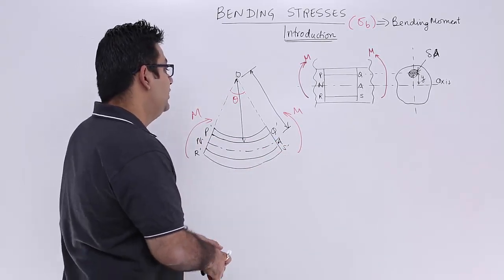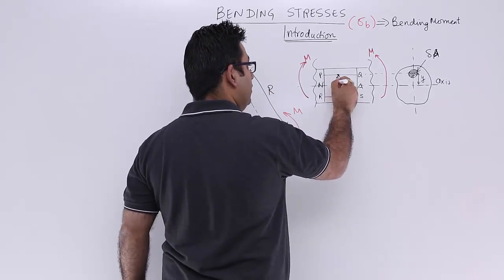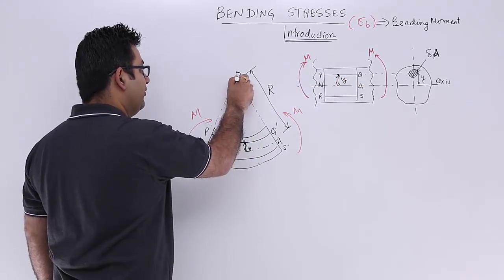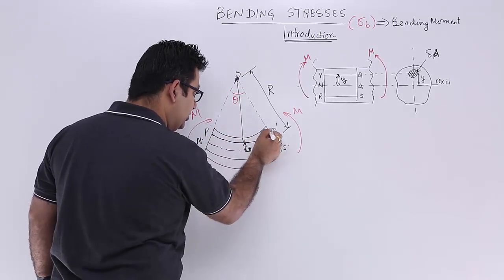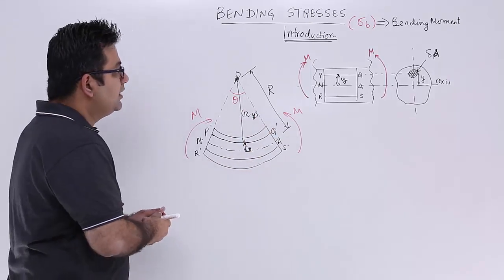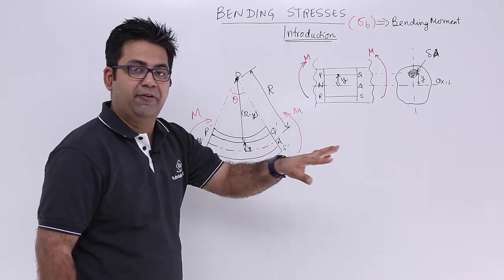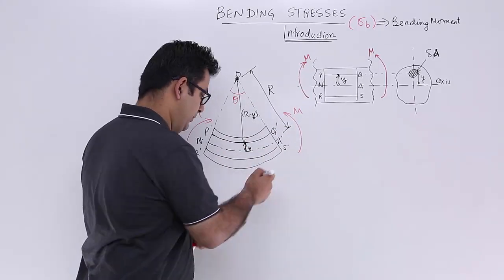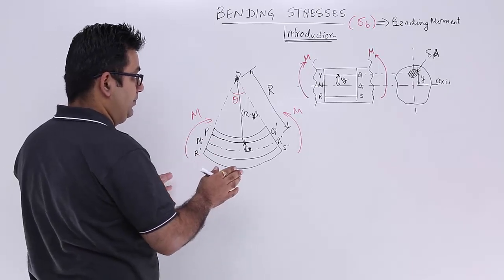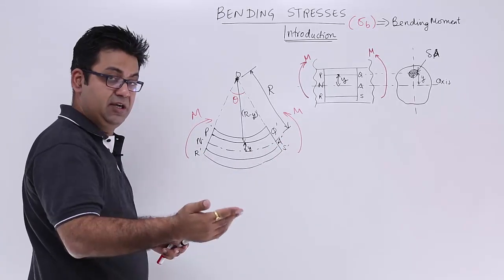From center O to the neutral axis NA, the radius of curvature is capital R. The distance from the center to the layer PQ is R minus y. After bending, layer PQ becomes P'Q', the axis NA becomes N'A', and layer RS becomes R'S'. It is clear that the length of P'Q' has reduced after bending, while the length of R'S' has increased after bending.